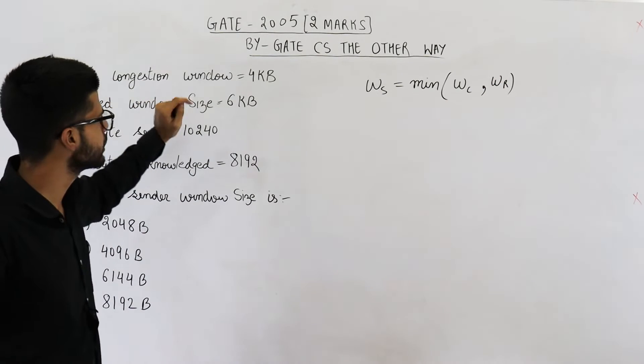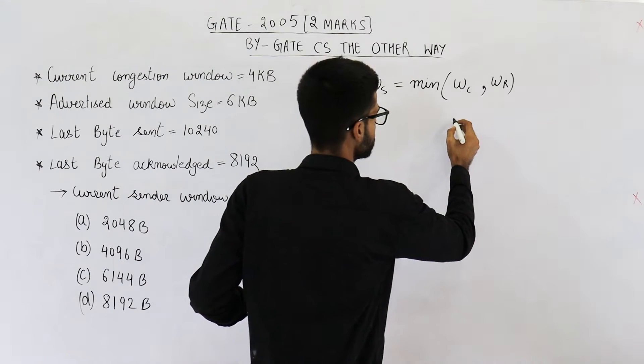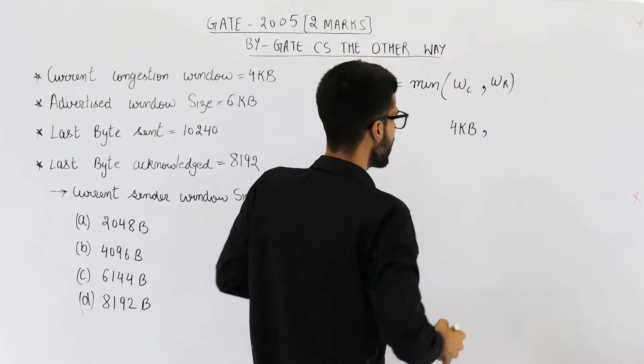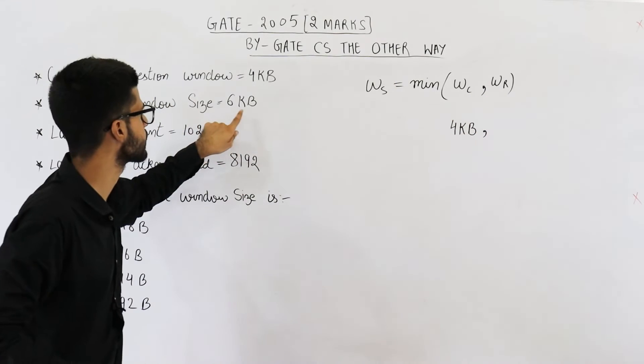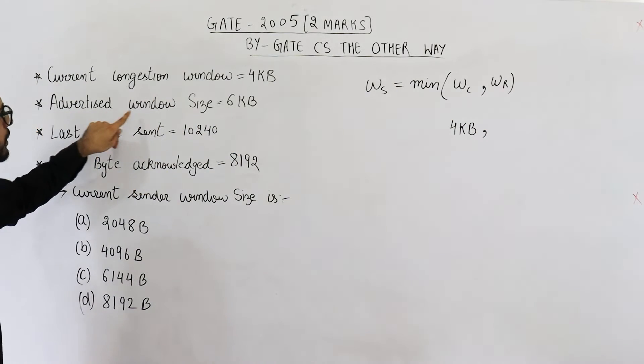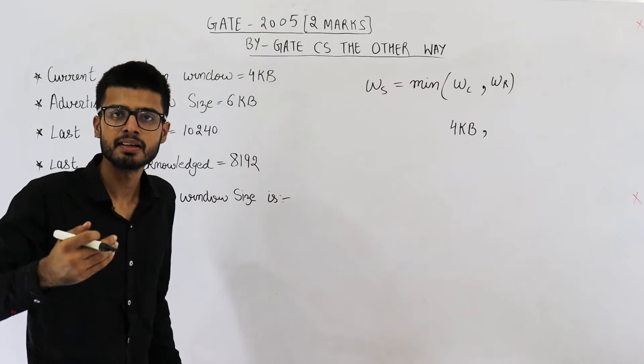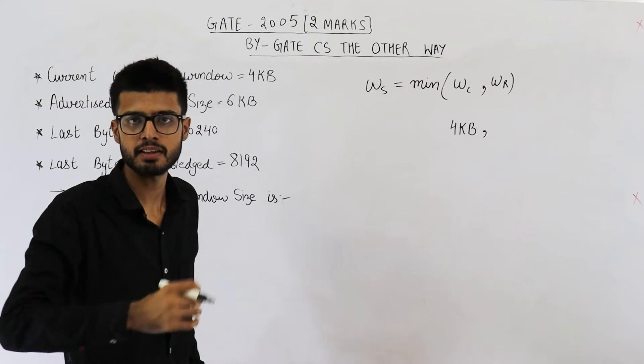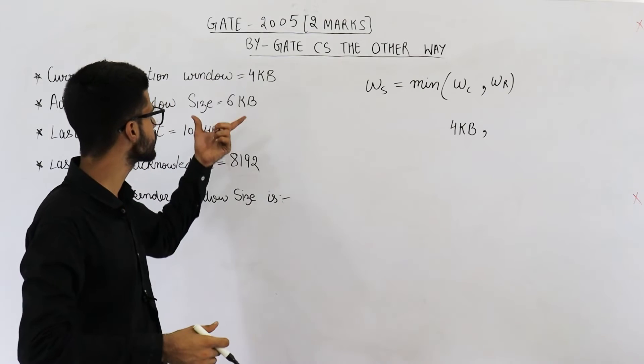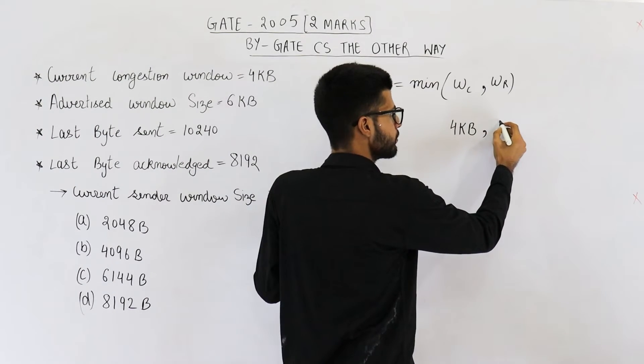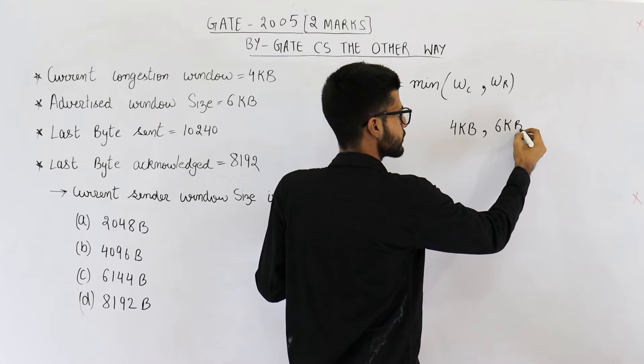Current congestion window is given as 4 KB. And receiver window is 6 KB. See, advertisement window is given as 6 KB. This means receiver is saying I have 6 KB of buffer memory. So window size of receiver is 6 KB. That means we have to take minimum of 4 KB and 6 KB.